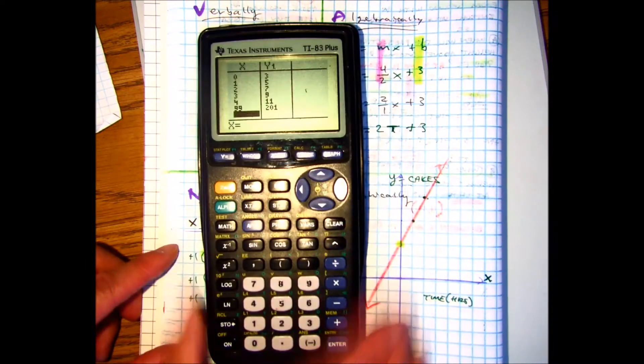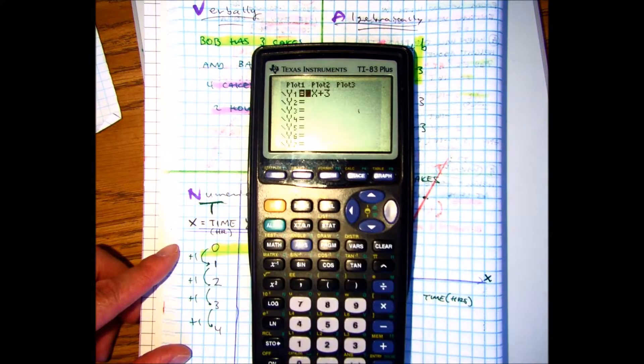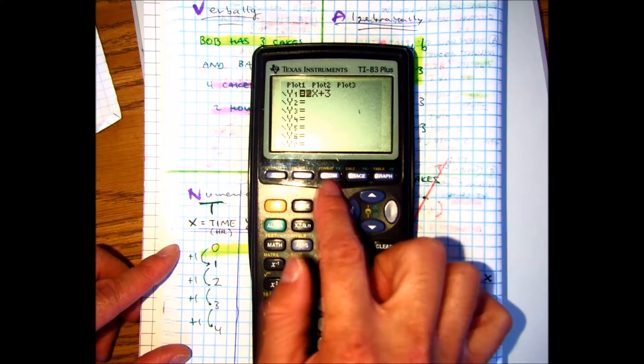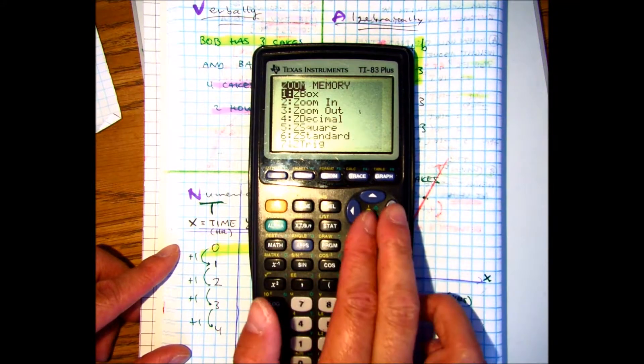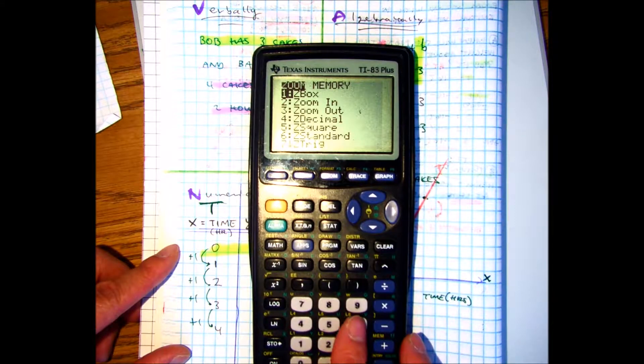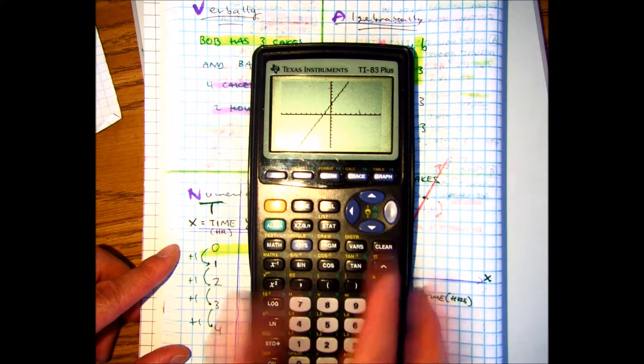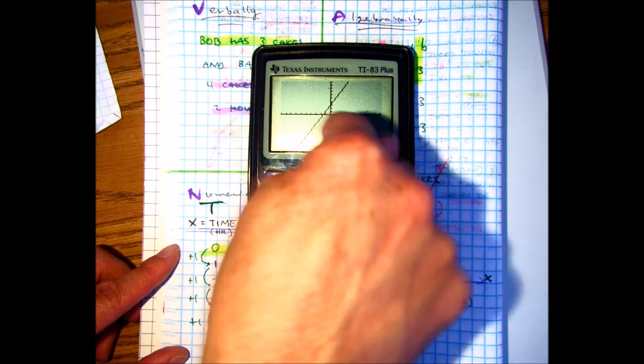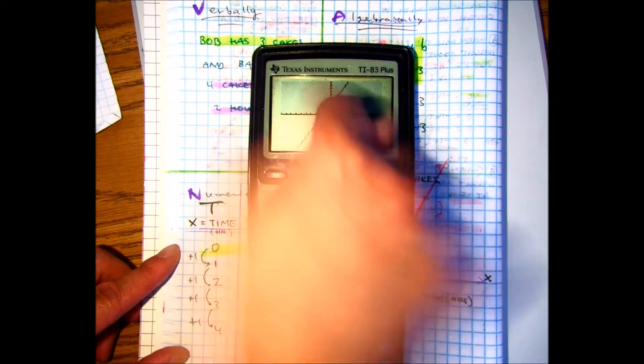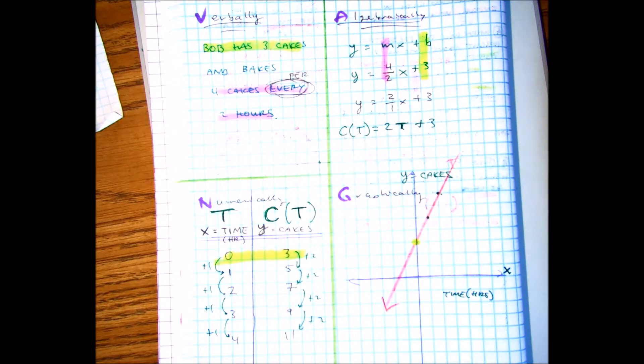Let's take a look at our graph. So I already have my function in there. And we can press zoom. Six. There it is. Time is a function that tells us the number of cakes. Independent gives us my dependent. So Vang represents mathematical modeling.